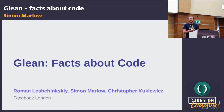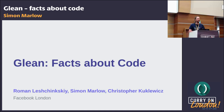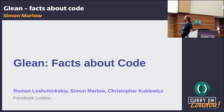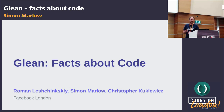I'm Simon, I work in the code search team at Facebook. I'm going to tell you about a system that we've been building over the last year called Glean. Glean has been built by three people: my two collaborators Roman and Chris have also worked on it — I want to make sure they get as much blame as me for this.